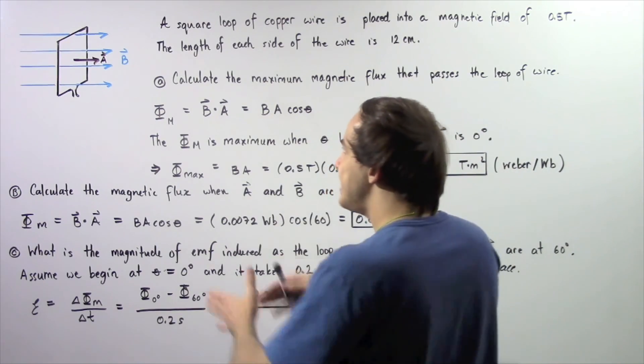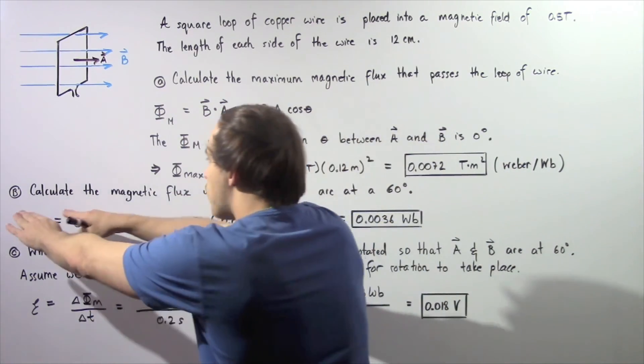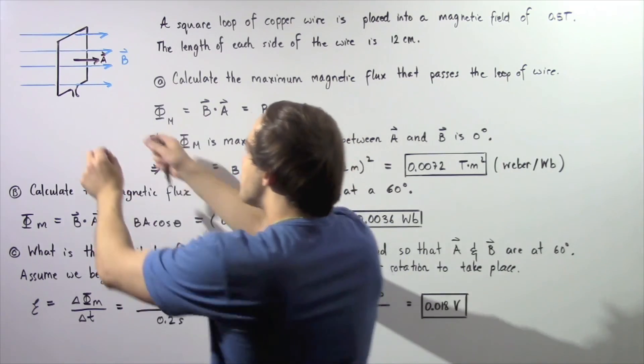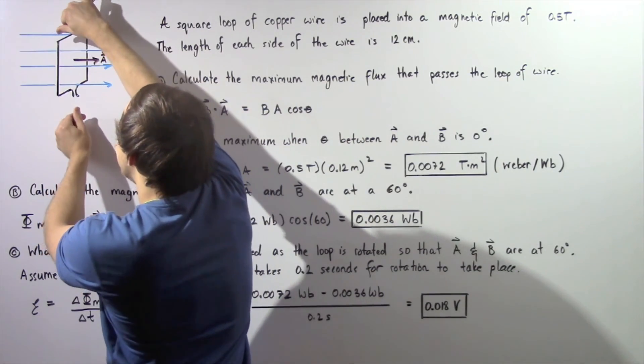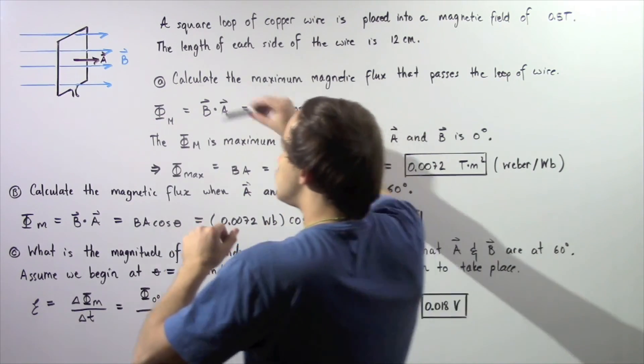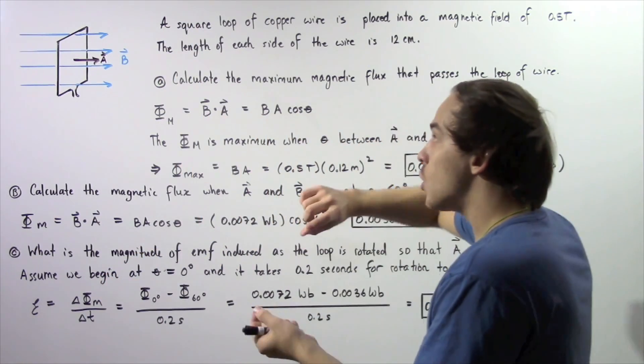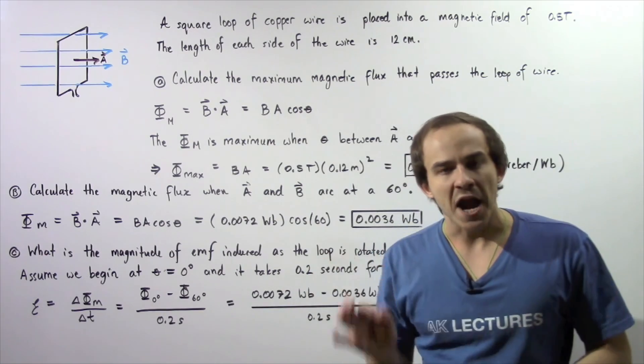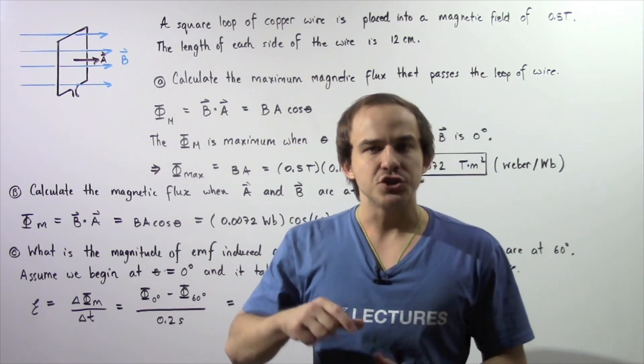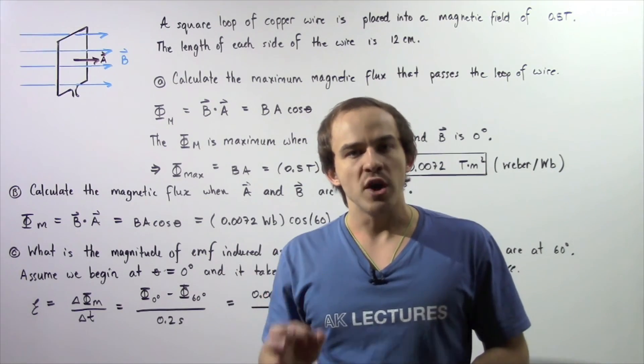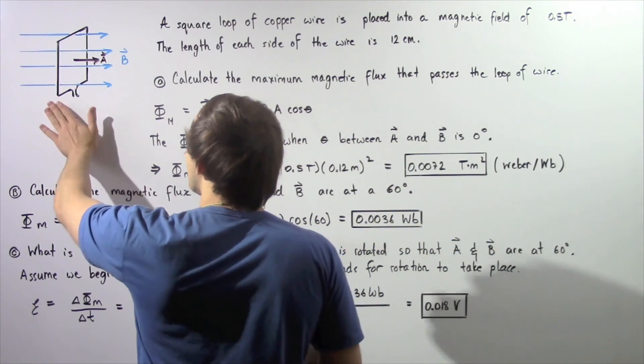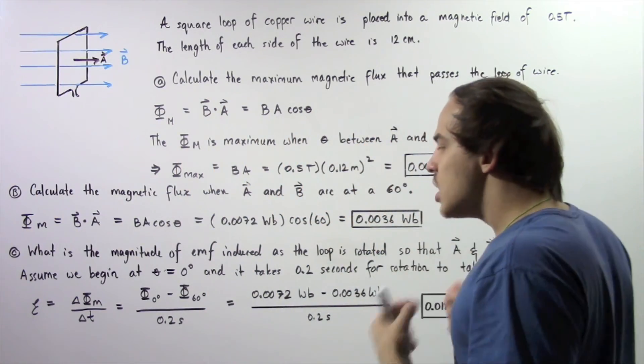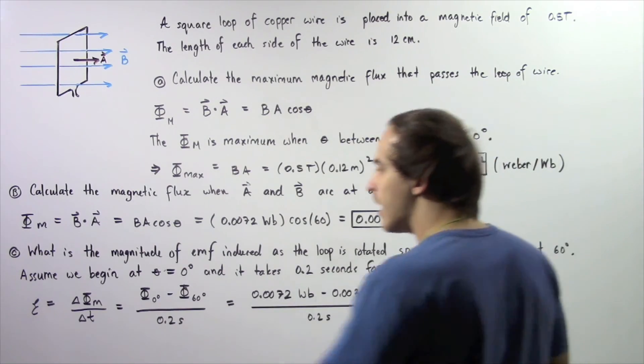So once again, we're essentially beginning in part A and we're rotating to part B. In part A, the angle was 0 degrees as shown in the following diagram. And then we take our loop and we rotate it 60 degrees so that the angle between A and B is 60 degrees. So that means there will be a change in magnetic flux. And by definition of Faraday's law, whenever there's a change in magnetic flux, an EMF will be induced inside this copper wire and an electric current will be induced and will flow through our copper wire.